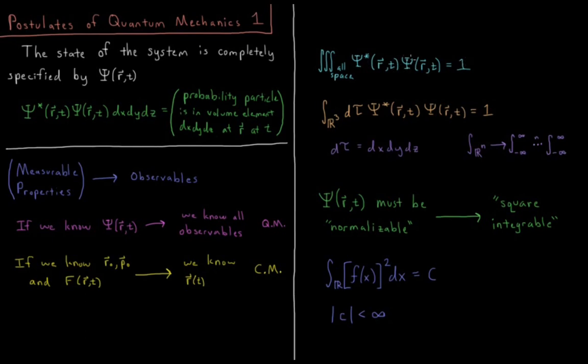So the probability that it's somewhere, integrated over everywhere, has to equal one, has to equal 100% chance of finding the particle somewhere in space.